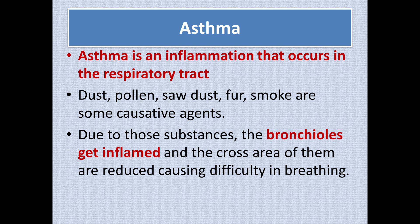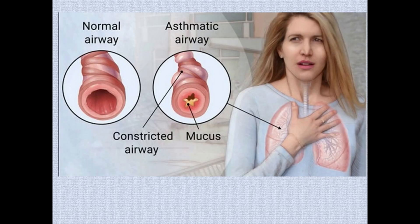Especially the bronchioles get inflamed and their cross-sectional area narrows down and reduces. The person feels difficulty in breathing, and sometimes a sound is emitted when air passes through these narrowed bronchioles. What you see on the screen is the normal airway of the bronchial tract, and when a person is affected with asthma, the bronchial tract gets narrowed down — the airway is constricted — and the patient feels difficulty in breathing.